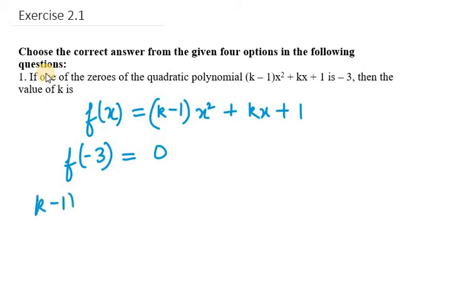So (k-1) times (-3)² plus k times -3 plus 1 equals 0.